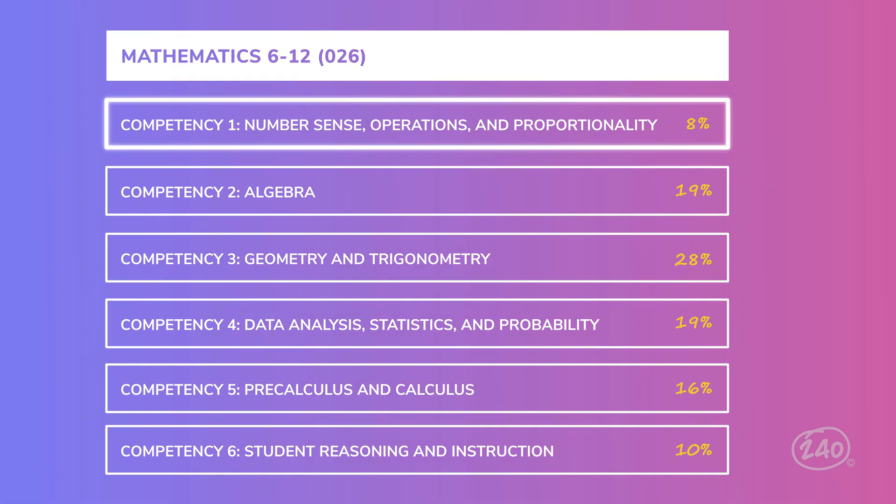First up, competency one: number sense and operations. This is all about performing operations with rational numbers, estimating irrational numbers, solving problems involving ratios and proportions, and more. Just like the produce section offers dozens of fruits and veggies, this competency covers a wide range of essential skills. For now, let's zero in on representing relationships.